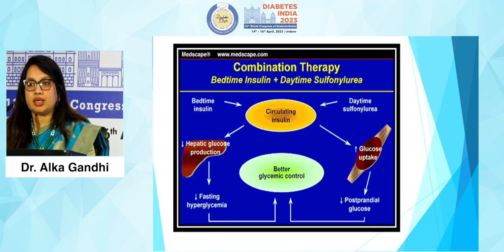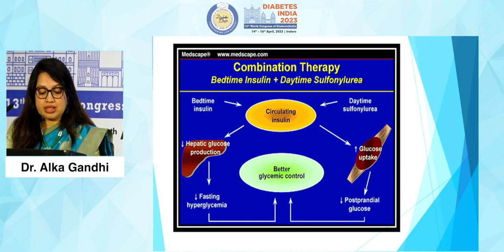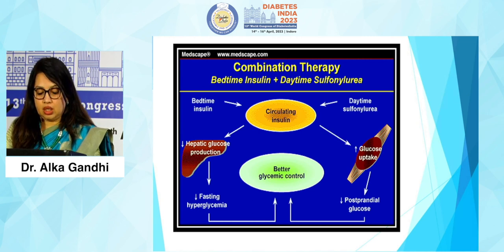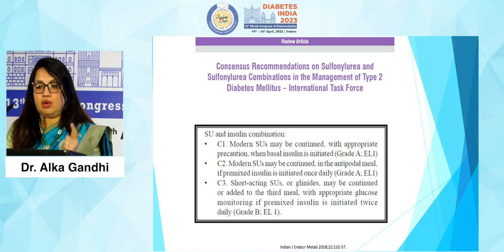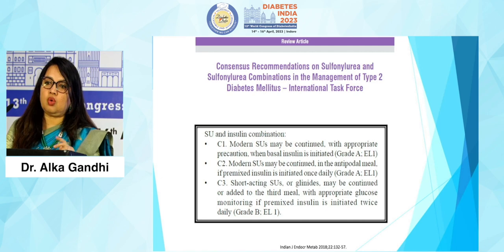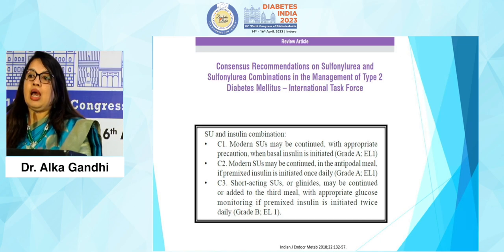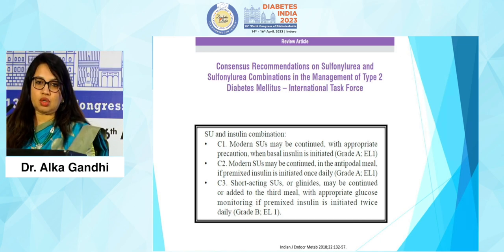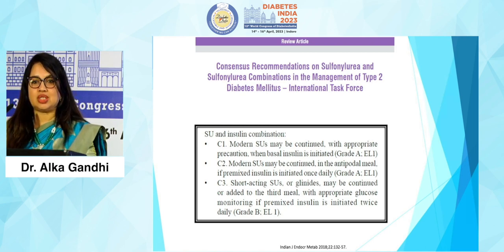Practically, as Dr. Agrawal also said, you either start a bedtime insulin and add a daytime sulfonylurea — this helps in decreasing hepatic glucose production and increasing peripheral uptake, thereby improving glycemic control. The international task force recommends you can add modern SU either with basal insulin, or if the patient is not controlled on premix, add SU at the other major meal. If the patient is already on twice-daily premix yet not controlled, you can still add SU as a third dose before lunch.